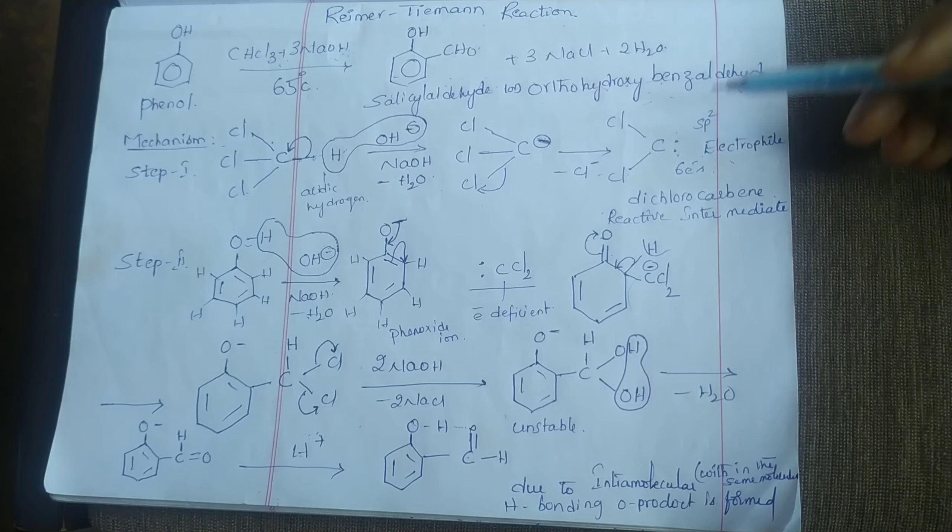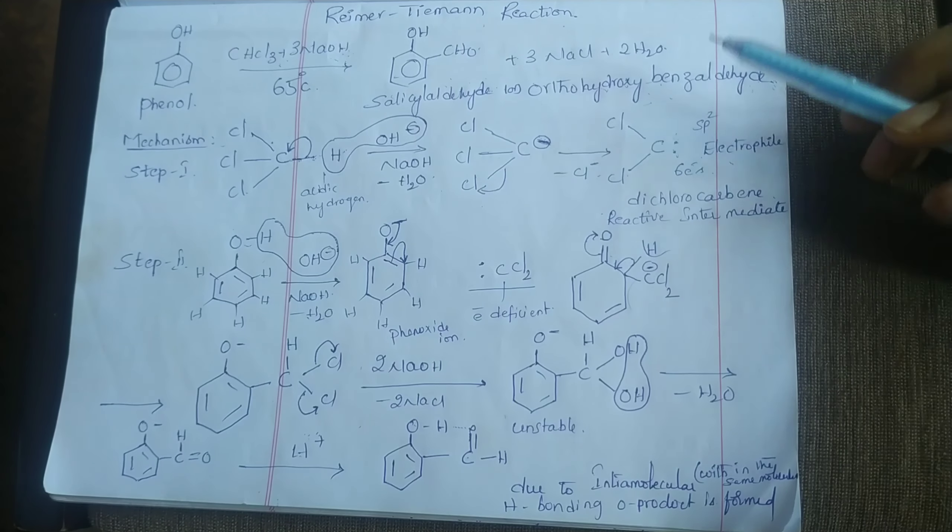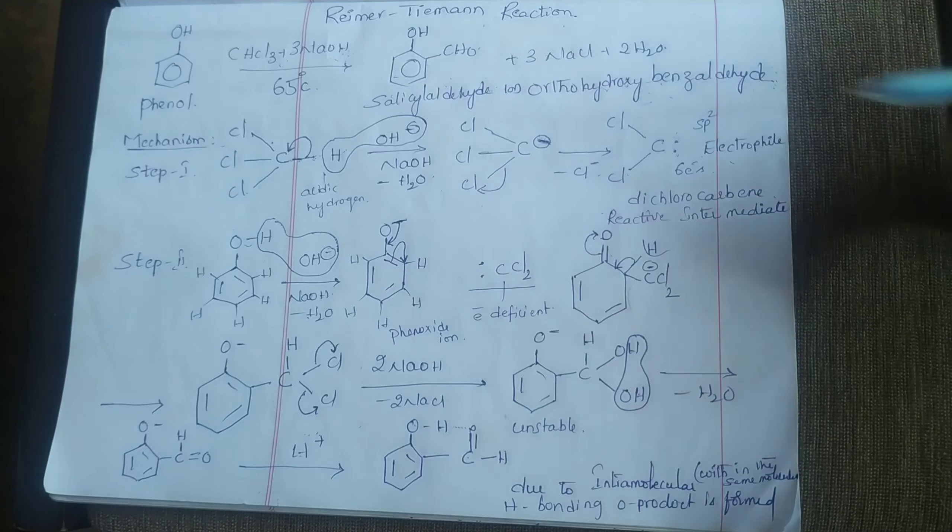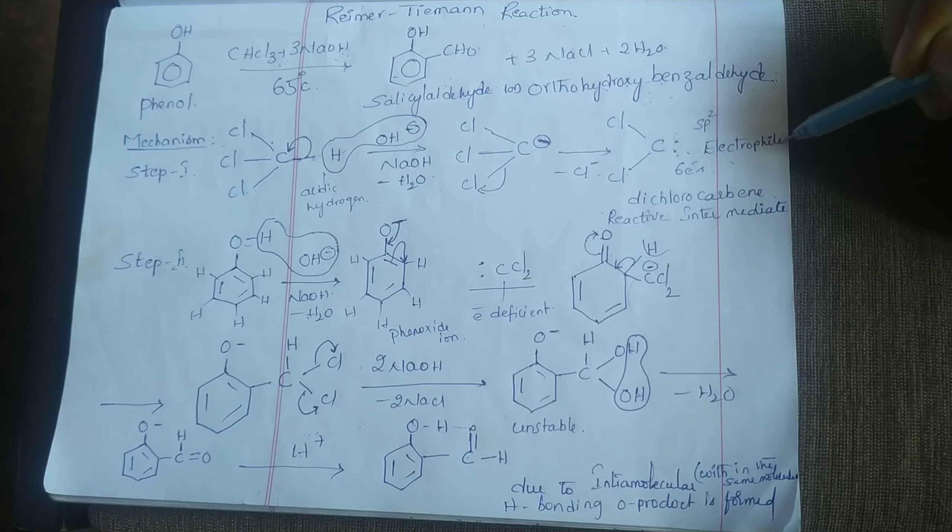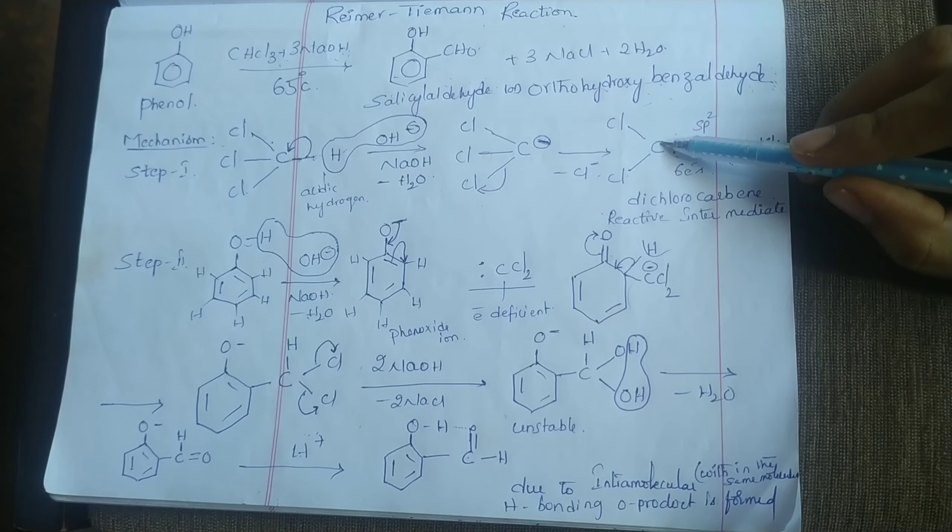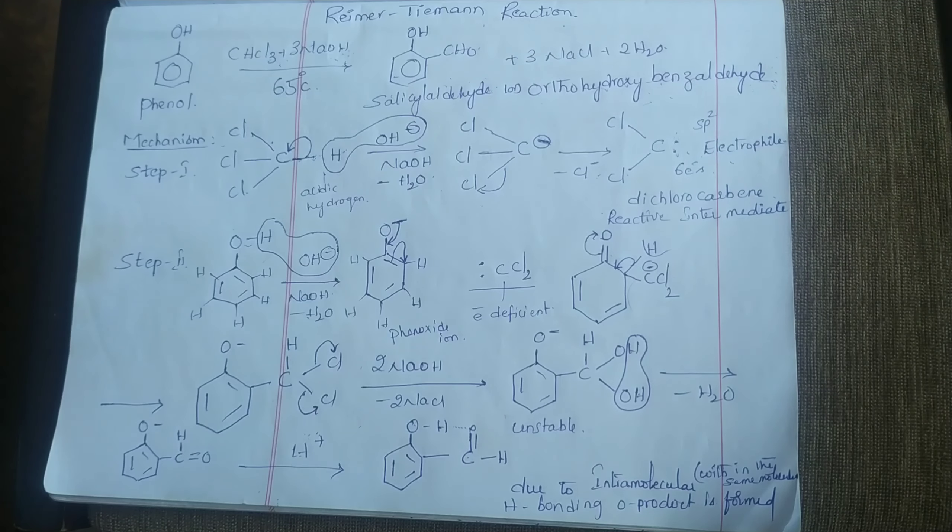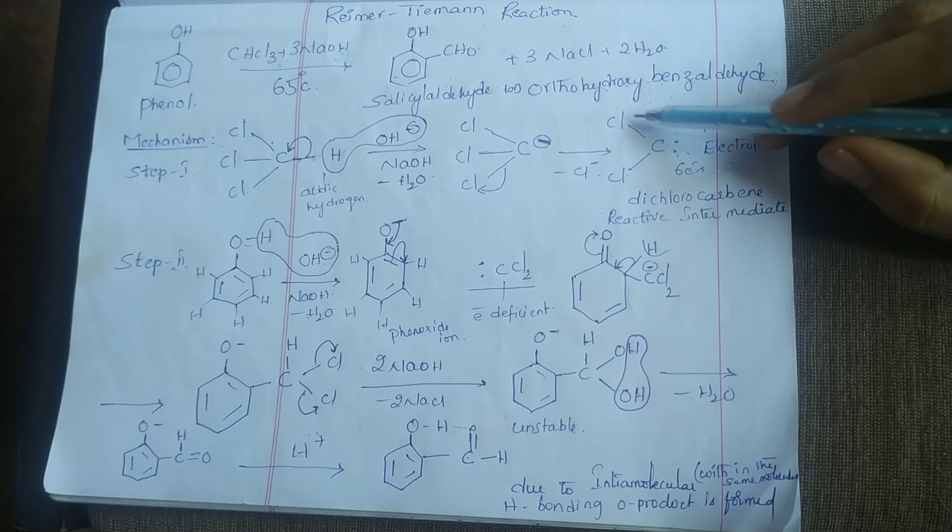To complete the octet, this carbon needs two more electrons. That means it is electron deficient, so it is an electrophile, and the hybridization is sp2 hybridization. So the name of this species is dichlorocarbene. This is the reactive intermediate in this reaction.